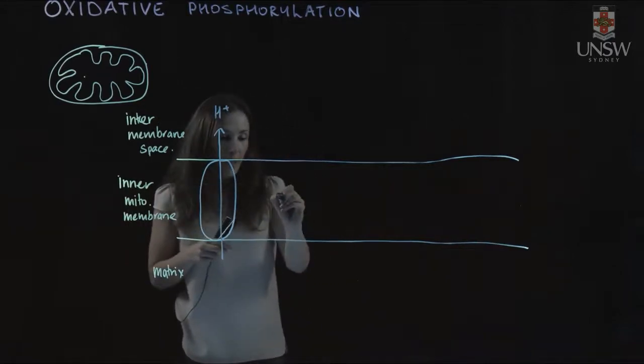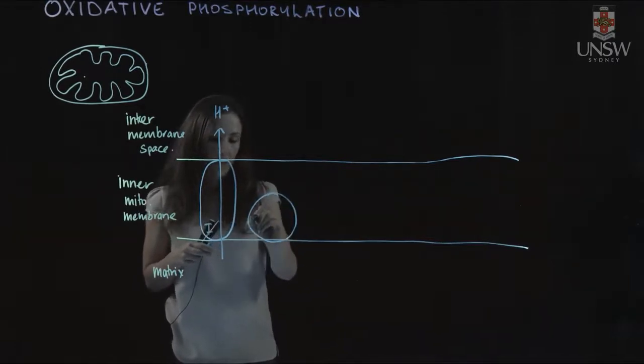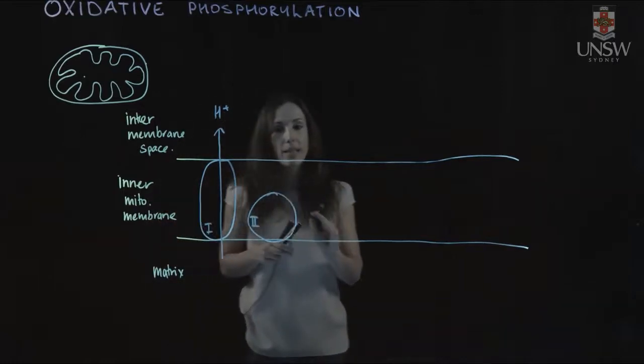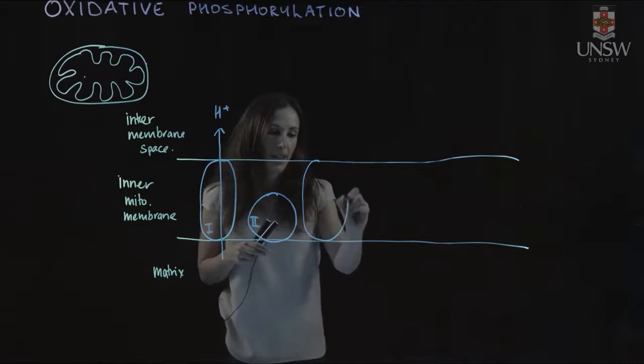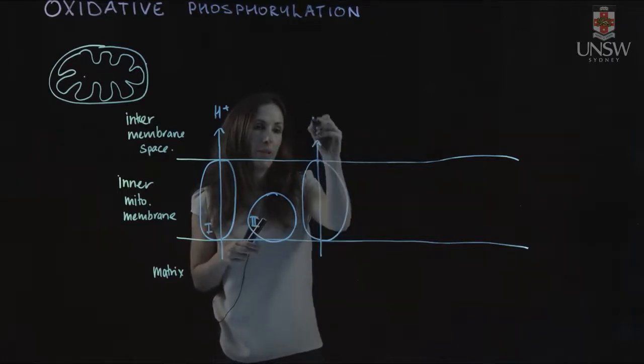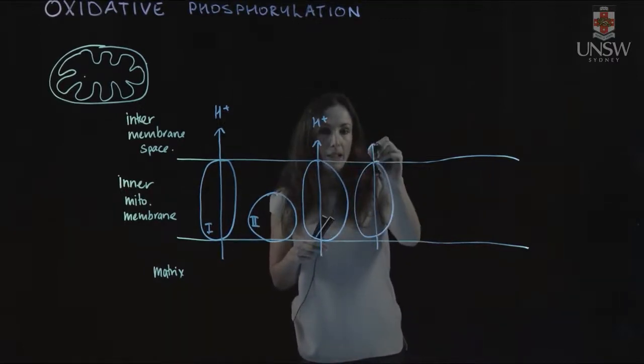Complex II doesn't transport protons. Complex III also has protons transported across, and so does Complex IV, which is the last one.